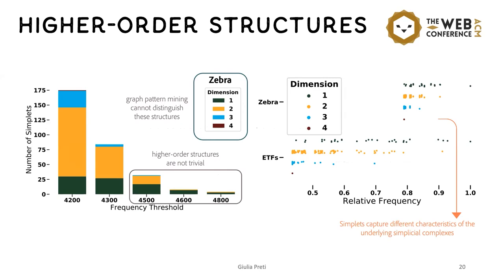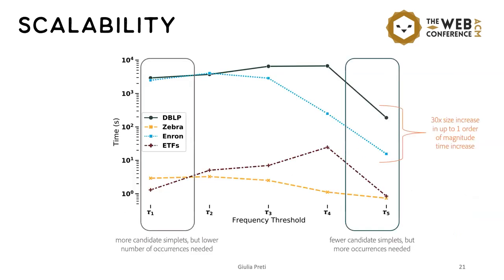And then by comparing the distributions of frequent simplets of different complexes, such as the two here on the right, we can identify which higher order structures characterize each complex and discover also similarities between complexes. In this case, we can see that these two complexes are quite different. In the ATF complex, for example, we can see that the simplets are more interconnected than those in Zebra, because we can see that both lower and higher order simplets have both high and low frequencies. Instead, those of Zebra basically all have the same frequency.